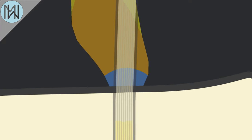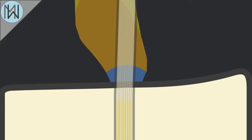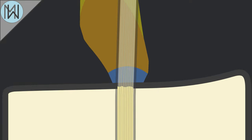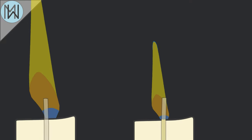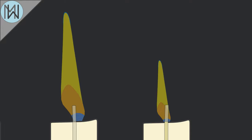Capillary action is a product of the gaps between the individual fibres in the wick, so a tightly wound wick with smaller gaps between the fibres will allow less wax to flow through than a more loosely wound wick.